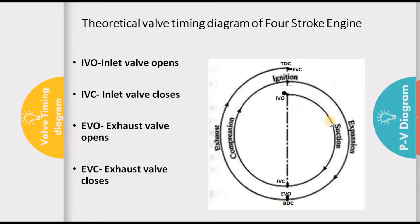The suction is happening from TDC and as the piston moves towards BDC, we assume that the inlet valve is closing at bottom dead center. So your suction ends at BDC and theoretically, the compression starts there. At this point, both the valves are in a closed condition.